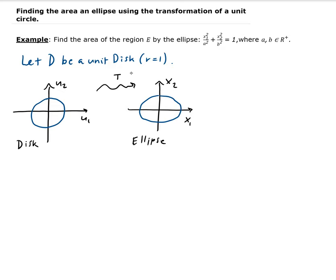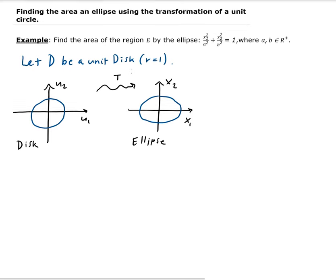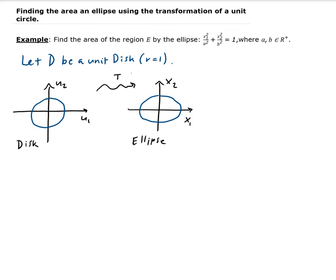We need a matrix that does this transformation. And it turns out that the matrix that does this, we're going to call that A, the matrix that transforms a disk into ellipse is [a, 0; 0, b].